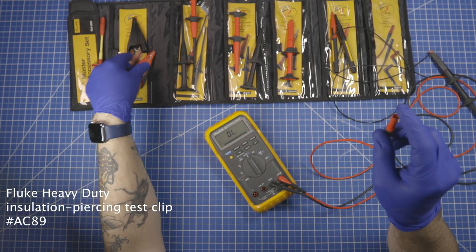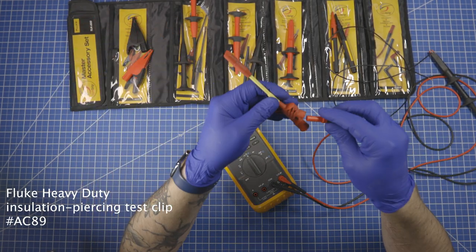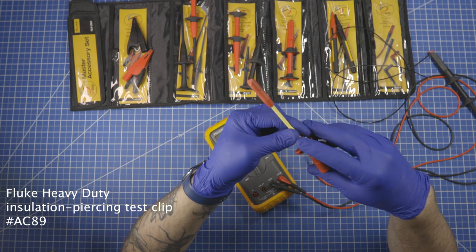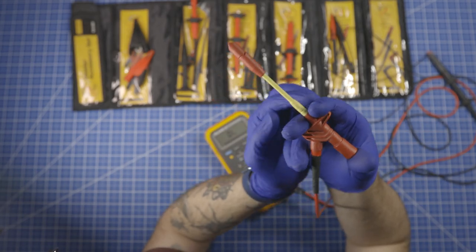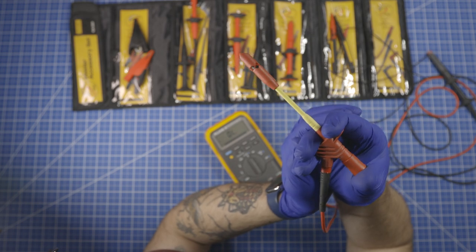Now lastly, we have this device. Now this does not come in a pair, it only comes in one. And what this does is it works like a thumb plunger.